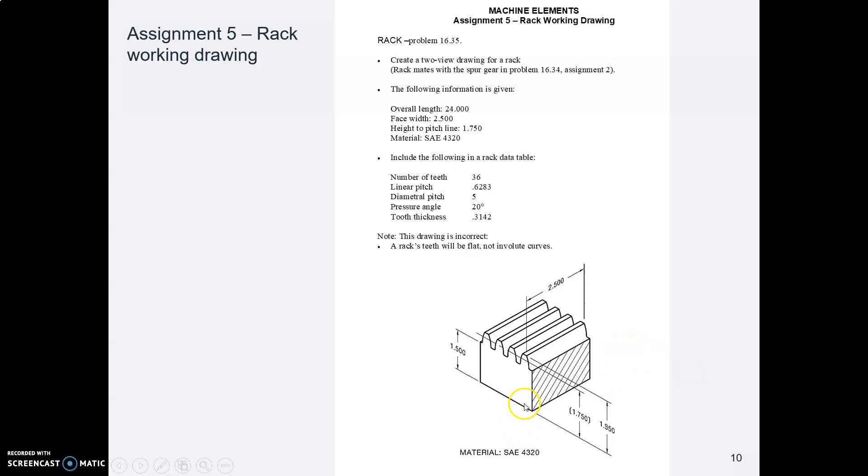Now one thing I should point out is this drawing is funky. He drew this isometric view of a rack as if the teeth had involute curves, and you now know that's wrong. They don't have involute curves, they're flat. We have a 20 degree pressure angle, so your teeth will be 20 degrees off of vertical.